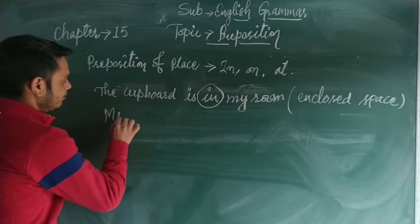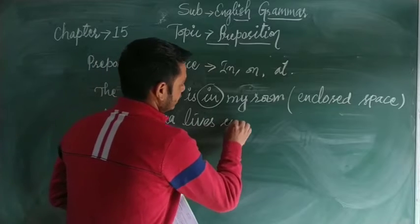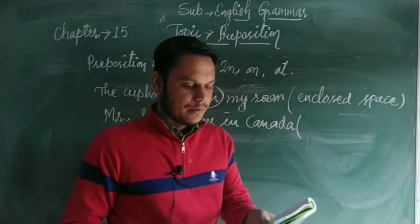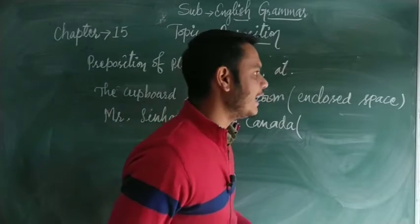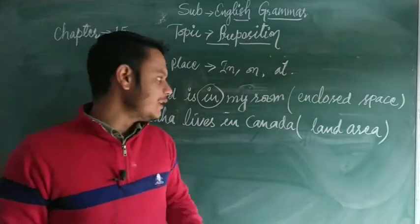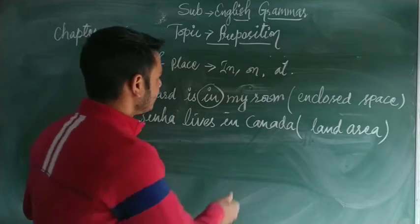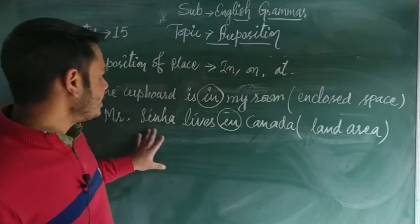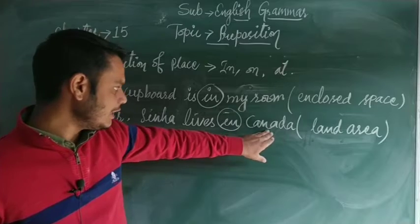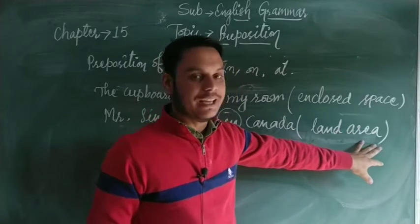Another example: 'Mr. Sinha lives in Canada.' Here 'in' is used to show a land area — Canada is a country, so it represents a land area or place name. That's why we use 'in' before Canada. So 'in' is used both for enclosed spaces and for land areas such as countries or cities.